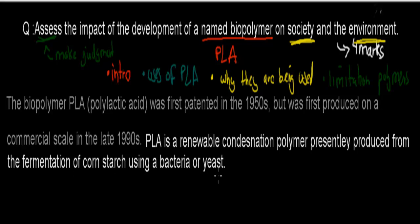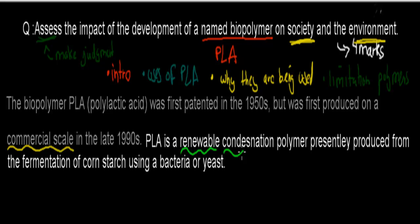The first part is the introduction. The biopolymer PLA, or polylactic acid, was first patented in the 1950s and first produced on a commercial scale in the late 1990s. PLA is a renewable condensation polymer presently produced from the fermentation of corn starch using bacterial yeast. This explains what PLA is and when it started to be commercially produced — so this is when it started to have its impact. We also mention that it's a renewable condensation polymer, which is important for later. This introduction probably won't get any marks yet, but it's good to have for a 4, 5, 6, 7, or 8 mark question.